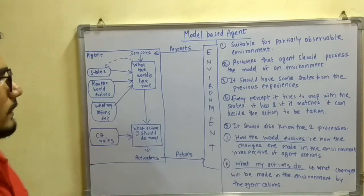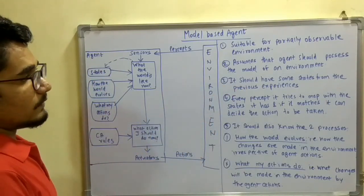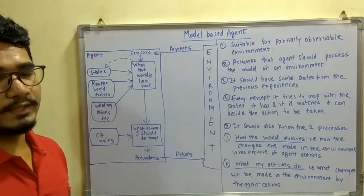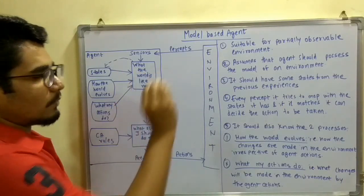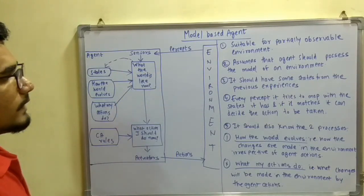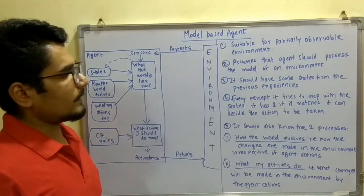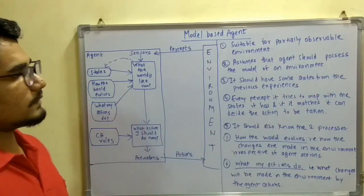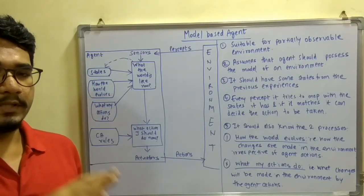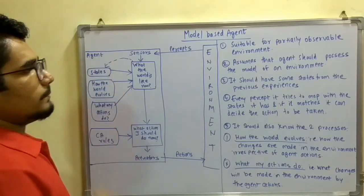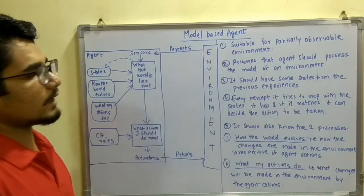So it is suitable for partially observable environment as well. In simple reflex, it was not the case - it should have fully observable environment for its operation. For model based, partial or full both can be done. It assumes that agent should possess the model of an environment. Some states or some learning from past experience should be there. That is compulsory for model based agent, otherwise this would fail.